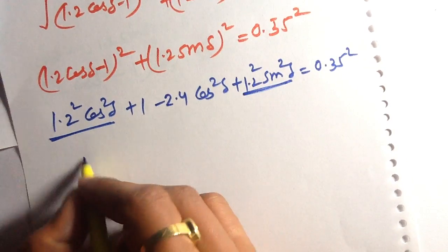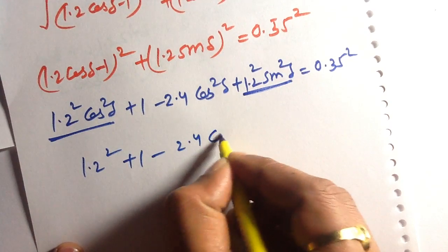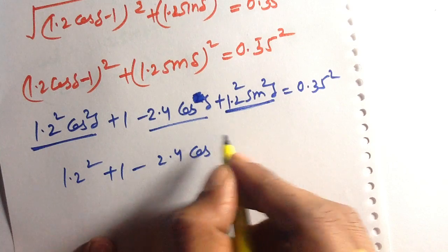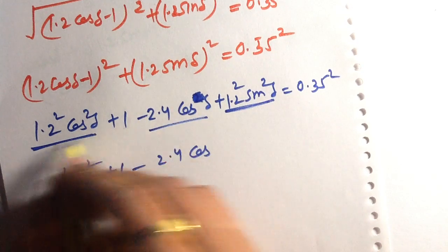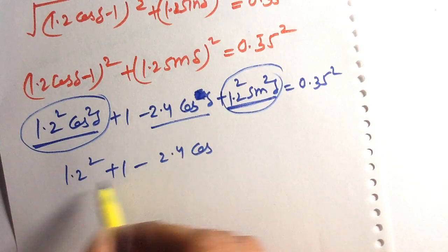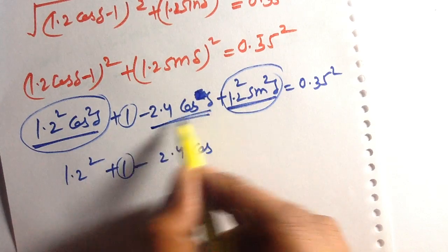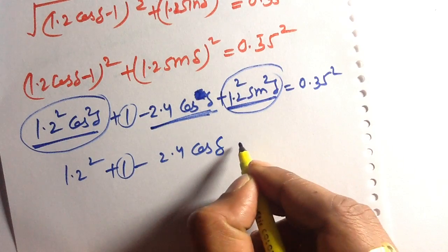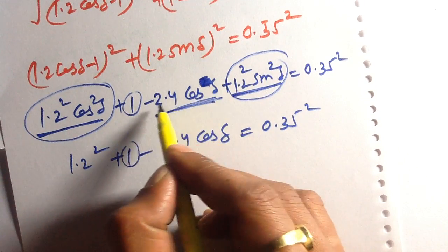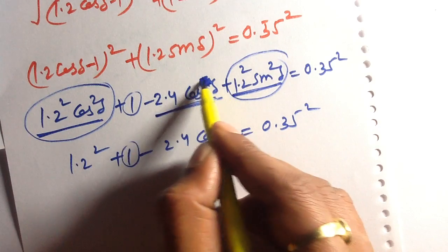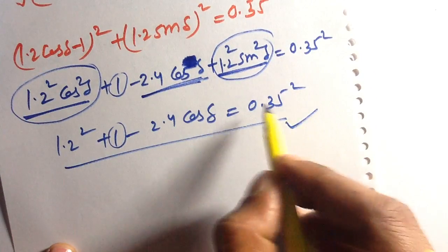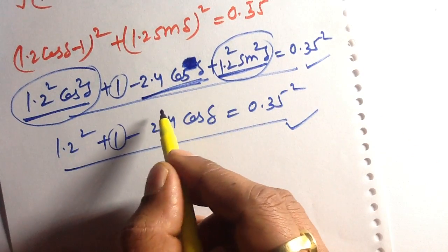Combining the two squared terms gives 1.2² + 1 − 2.4 cos δ = 0.35². I had previously written minus 2.4 cos² δ by mistake — the correct term is minus 2.4 cos δ, without the square. With that correction, this is the correct equation to solve for δ.